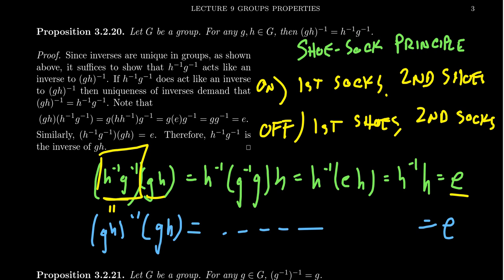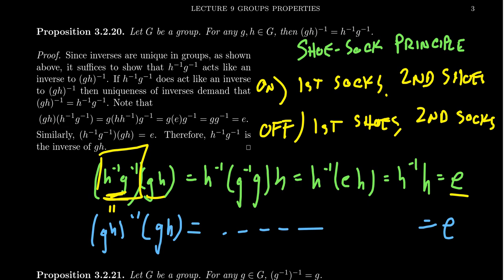In this situation, the only way this element could give you the identity was as the inverse — and it worked, it's an inverse. The other direction works as well. In the proof I wrote GH times H inverse G inverse; the other direction is similar. So the uniqueness of inverses shows us the shoe-sock principle.